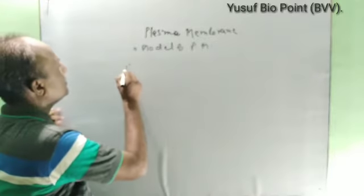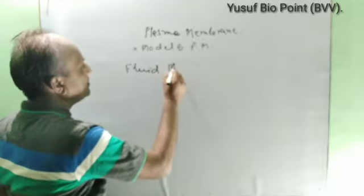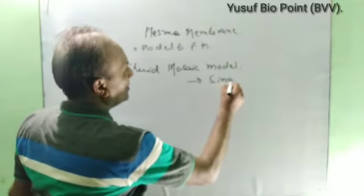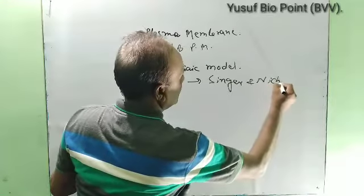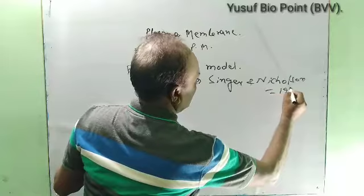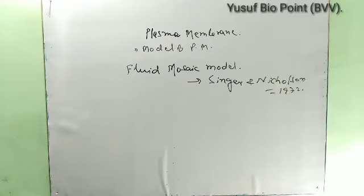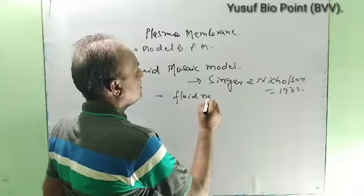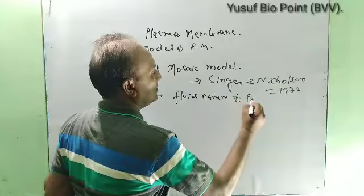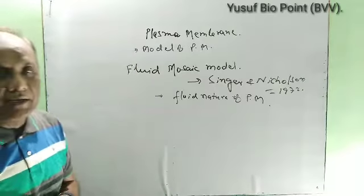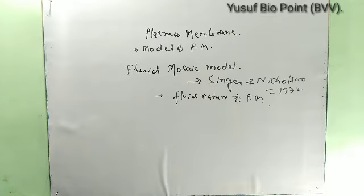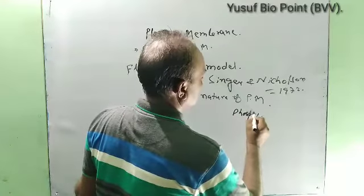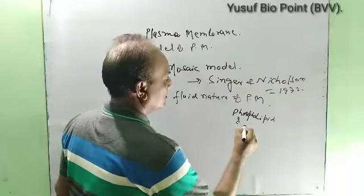Now the next one is the fluid mosaic model, given by Singer and Nicholson in 1972. This is the most acceptable model — it shows the fluid nature of the plasma membrane. According to this model, it is also composed of phospholipid and protein.